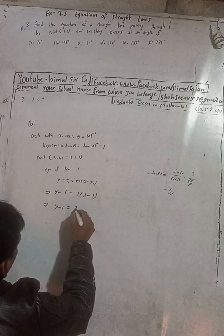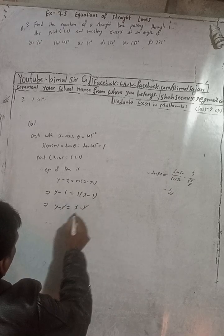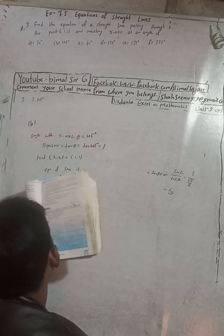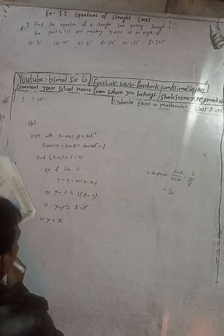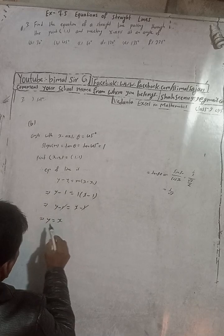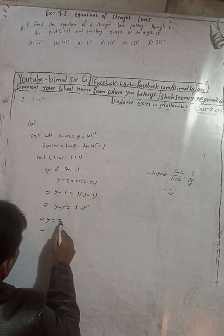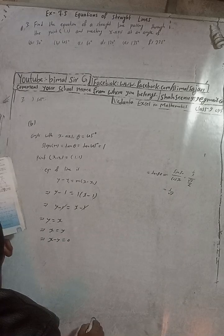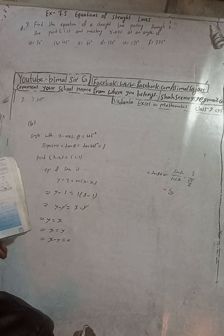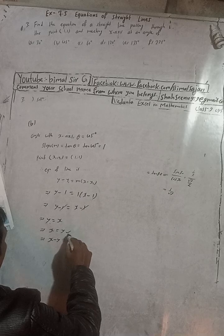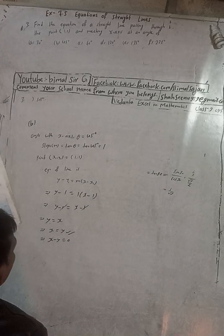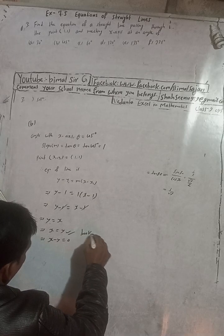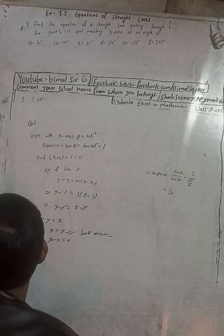Simplifying: y minus 1 equals x minus 1, so the minus 1s cancel and y equals x. The book gives the answer as x minus y equals 0, which is the same thing rearranged. Both forms are correct — you can write either y equals x or x minus y equals 0.